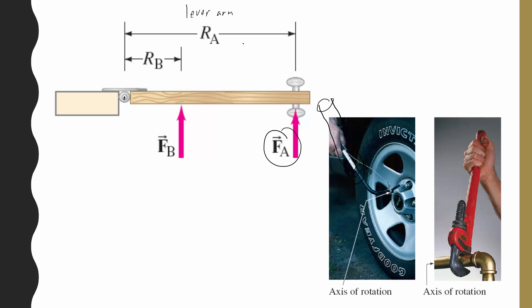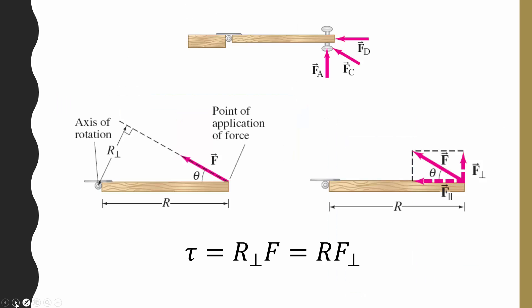So if you get a larger lever arm, you're going to be able to get more torque to rotate that object. That's why pipe wrenches tend to be quite long. It gives you quite a bit of torque. Now, it's not only the location of the force, but the angle of the force also matters.